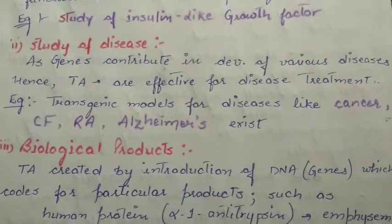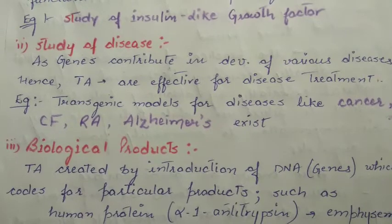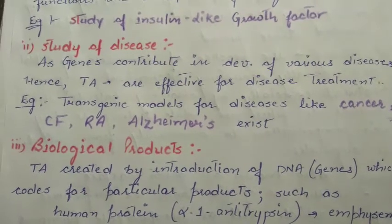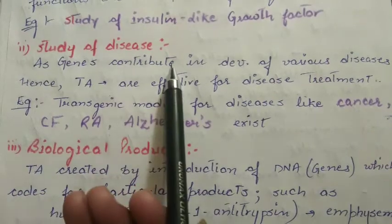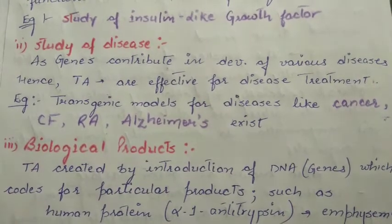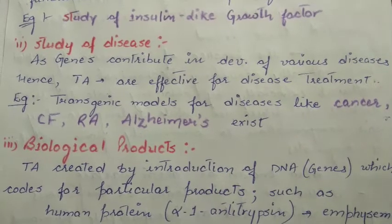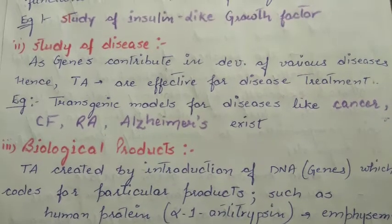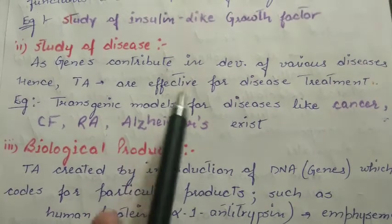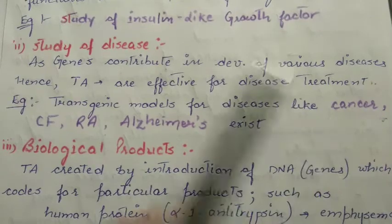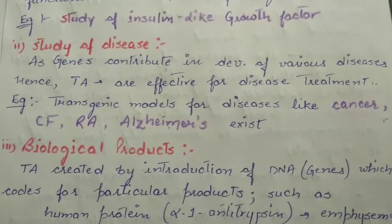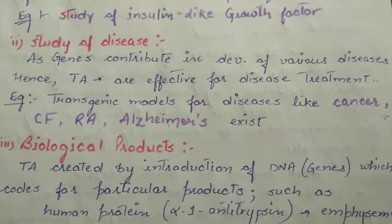The next benefit is the study of disease. Many diseases in our body have genetic disorders, meaning the gene sequence changes. If we know which gene is contributing to the development of which disease, we can introduce that gene into transgenic animals and study its effects. For example, diseases like cancer, cystic fibrosis, rheumatoid arthritis, and Alzheimer's disease. Transgenic animals have been created so that we can understand what gene sequences cause what types of diseases.